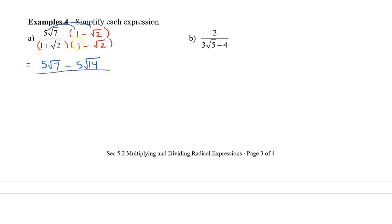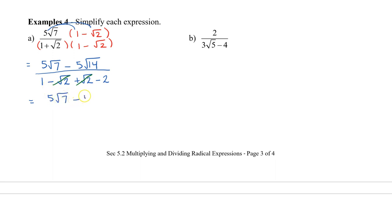In the denominator: 1 times 1 is 1, then 1 times (−√2) is −√2, then √2 times 1 is +√2, and √2 times √2 is −2. The −√2 and +√2 cancel off, leaving 1 − 2, which is −1. So the numerator is 5√7 − 5√14, all divided by −1.